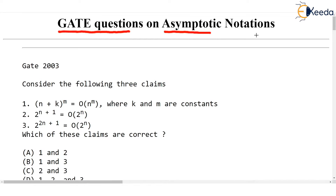Let's start with the GATE 2003 question in which they have given three claims — 1, 2, and 3 — and they are asking which of these claims are correct. Let's start with the first claim. We have (n + k)^m on the left hand side, and they are asking: is (n + k)^m equal to O(n^m)?